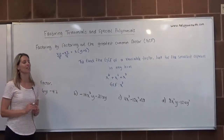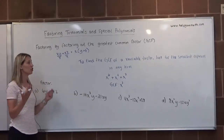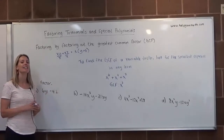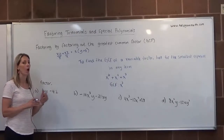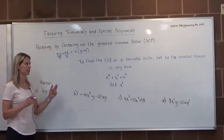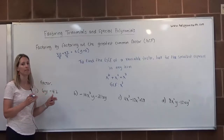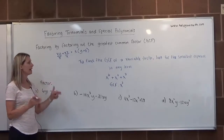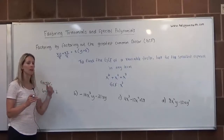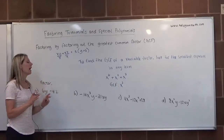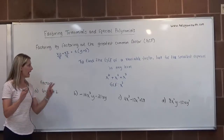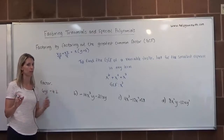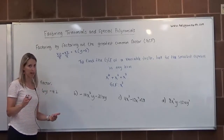One more thing before we get to the examples: generally, if the leading term has a negative, we always factor out a negative regardless — it's not part of the GCF, it's just the standard way of factoring. So any polynomial we're trying to factor, if the first term is negative, factor out a negative.